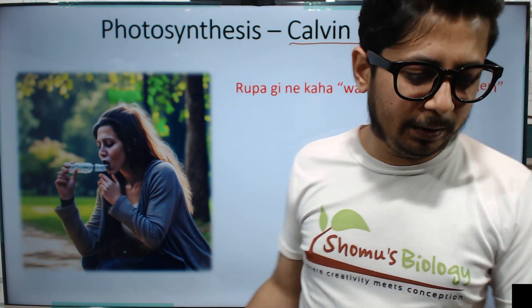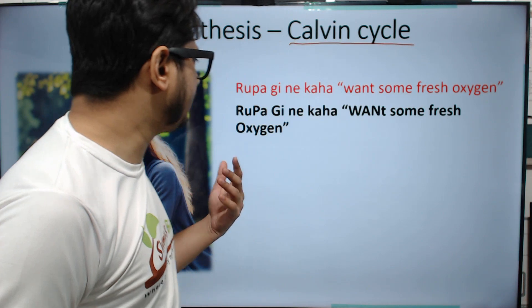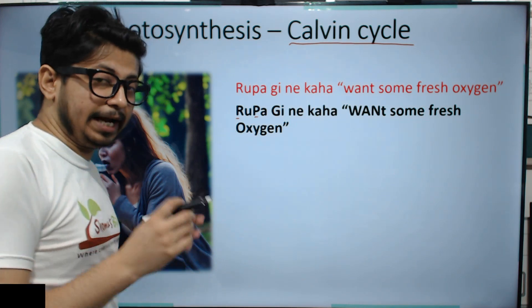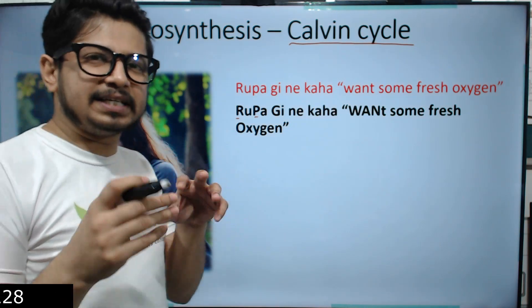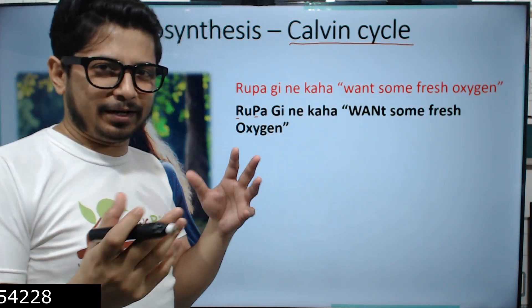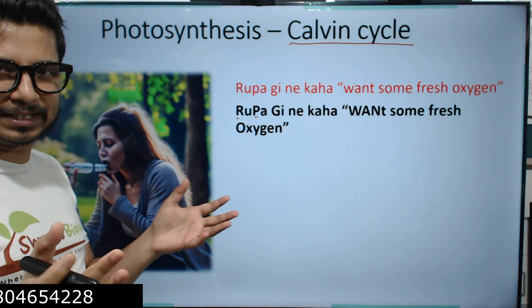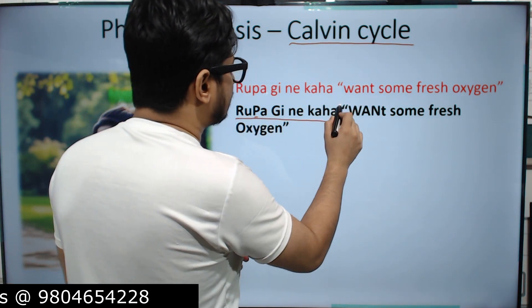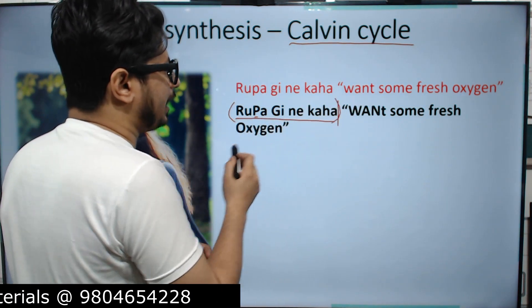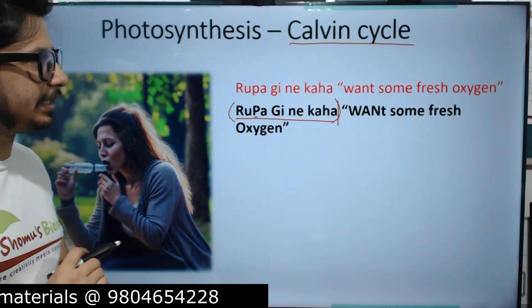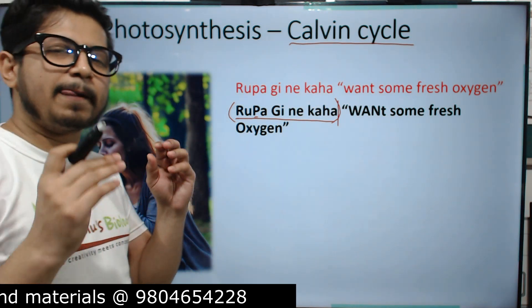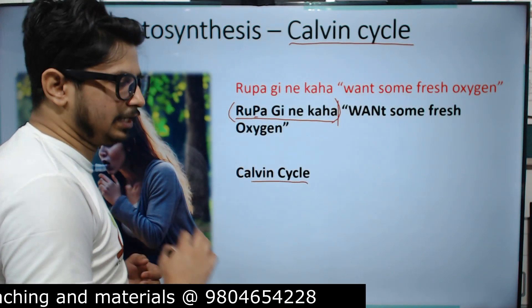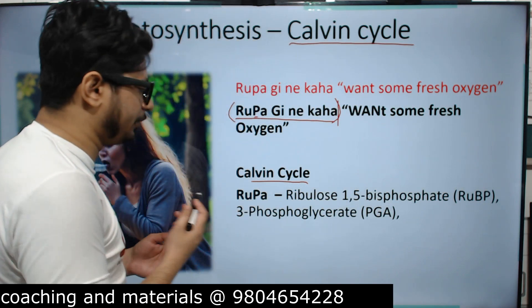We rearrange this sentence using capital alphabets that denote the names of the enzymes and intermediates involved in the Calvin cycle. 'Rupa ji ne kaha' covers the Calvin cycle intermediates, while 'want some fresh oxygen' covers the products of the light reaction.